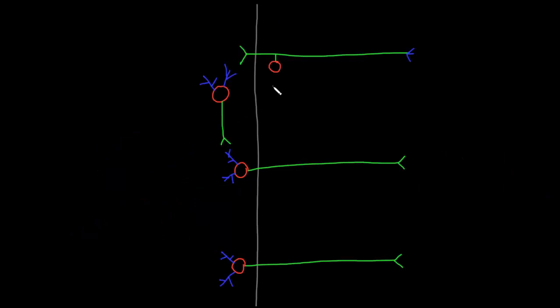Here I've drawn a few different neurons with their somas in red, their axons in green, and their dendrites in blue. I've drawn a line here to separate between the central nervous system on this side—CNS for short—and the peripheral nervous system on this side—PNS for short.